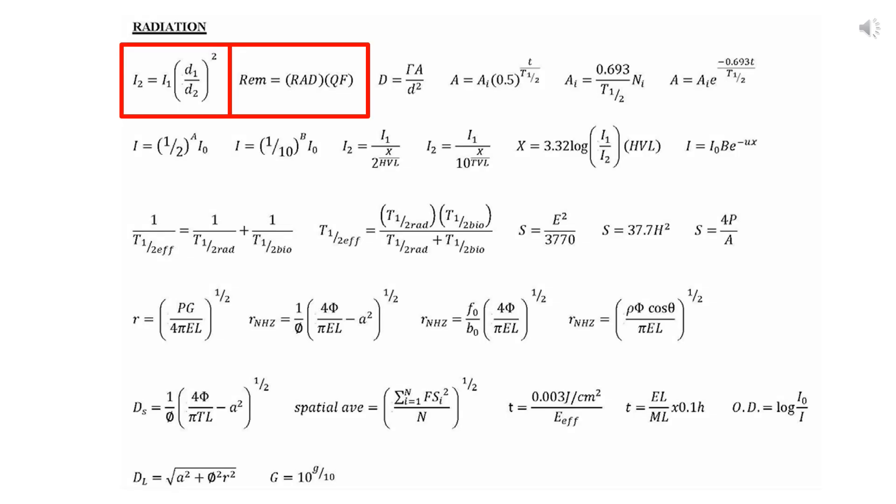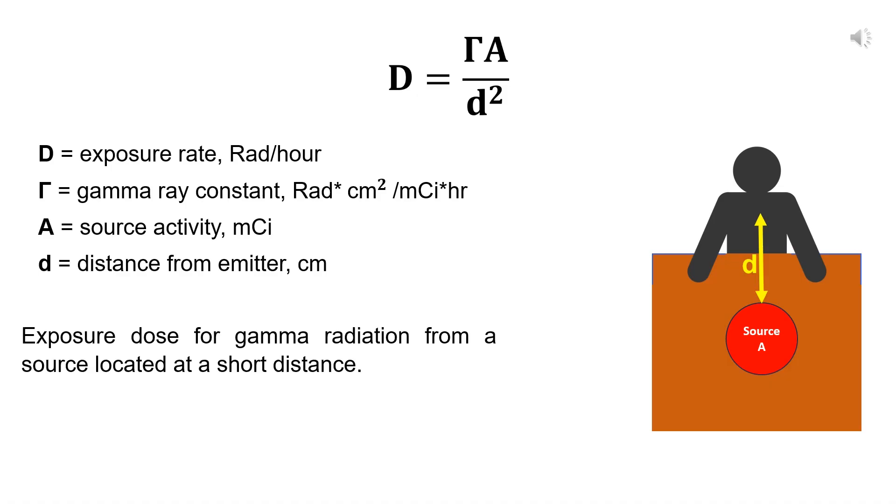Now let's go to the third equation. This equation is somewhat analogous to the first one. This equation describes the exposure for gamma radiation from a source located at a short distance. Exposure dose decreases with the square of the distance from the source, like in the first equation, but it's influenced by the gamma ray constant and source activity. Gamma is the exposure rate constant, which is dependent on the particular radionuclide used as the gamma ray source.